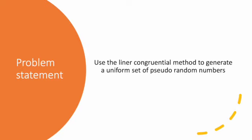The problem statement is: Use the linear congruential method to generate a uniform set of pseudo-random numbers. If we know what a random number is, we will know what a pseudo-random number is. So, let's first understand what a random number is.